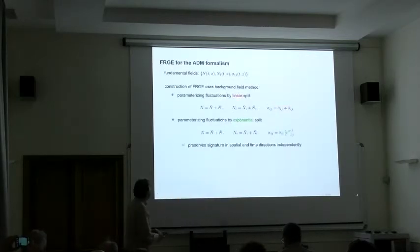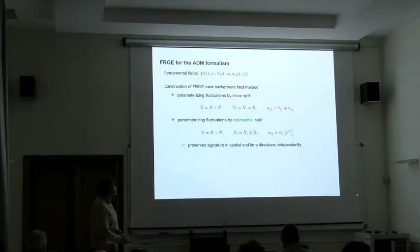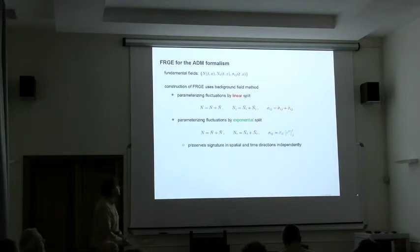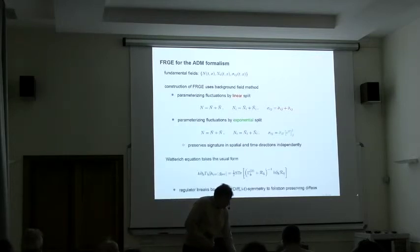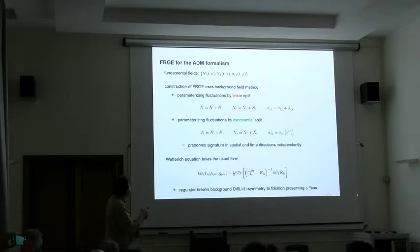Then, we declare these are our fundamental fields that we have to encode our gravitational degrees of freedom. We split them into background fields plus fluctuation fields. There is some choices involved. What we see is, if we apply this parametrization of the fluctuations, then this is a refinement of the standard exponential parametrization. In this case, we can preserve the signature of space and time directions independently. Once this choice is made, one can go through the standard derivation of the flow equation. It takes the same form. Here, this trace takes care about all these fields.